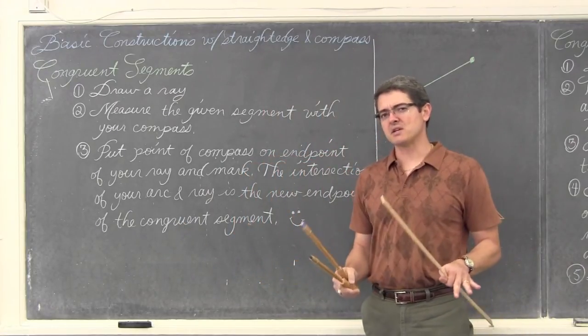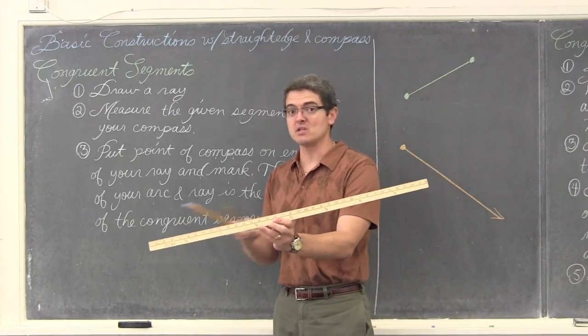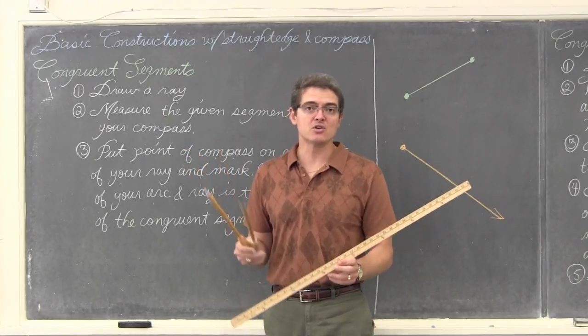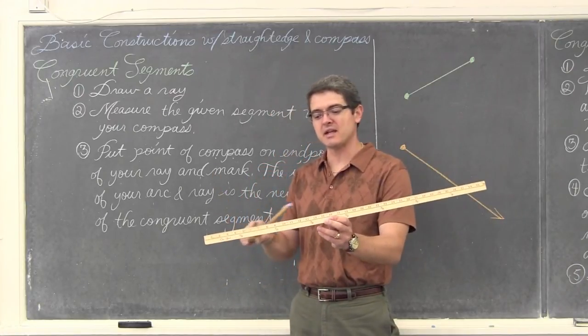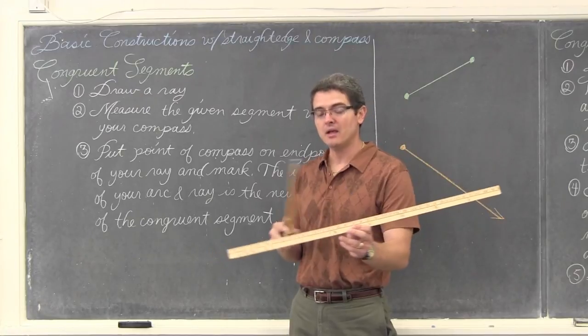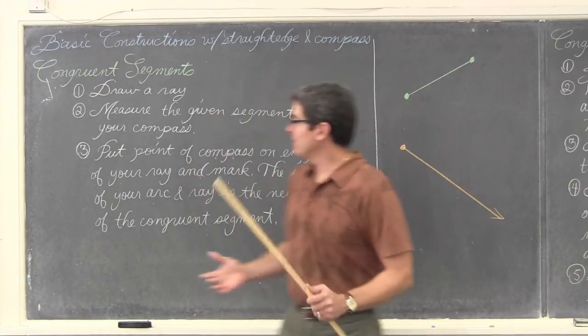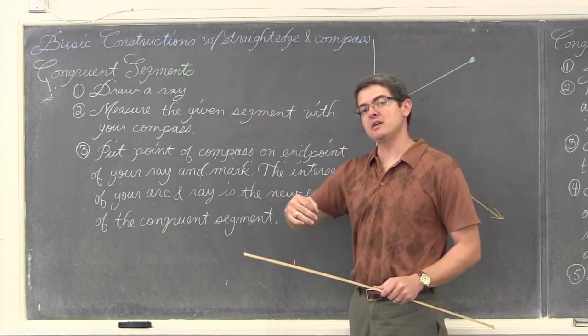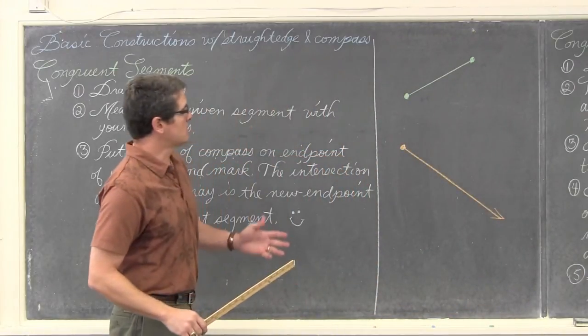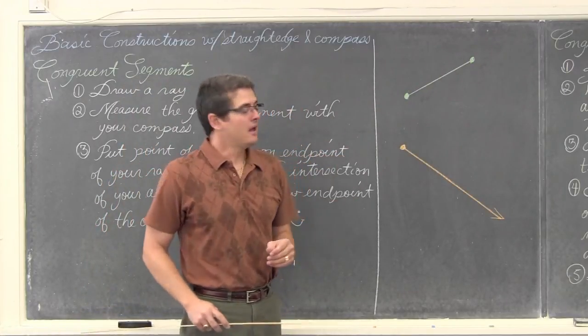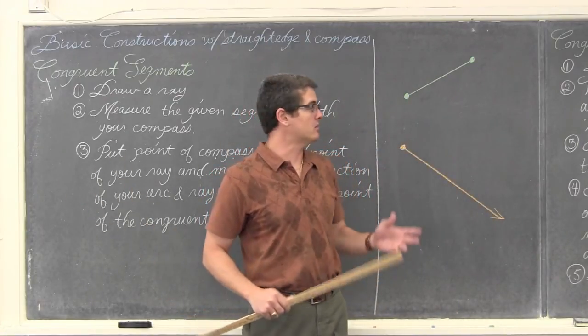So we are just going to do some basic constructions. A compass and a straight edge. Now, this is a yardstick. I'm sure you can see in the camera that it has measurements on it. A straight edge does not have measurement. That is the purpose of it, that is what the compass does, is take measurements. So a straight edge really does not have inches or centimeters marked on it to take measurements. We are going to talk about constructing a congruent segment and a congruent angle in this video, and then in the next video we are going to bisect those.